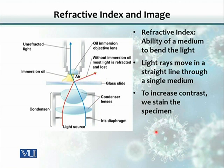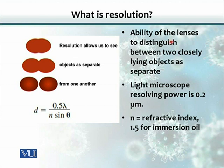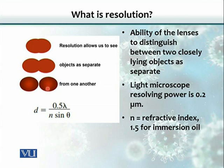In order to increase contrast, we stain the specimen. Staining is basically to increase contrast so our eyes can see the organism or object more easily. Resolution is the ability of a lens to distinguish between two closely lying objects as separate. As you can see here, two objects may appear to overlap — that means the resolution power of that microscope is low. With a microscope of higher resolution, the objects can be seen as separate, and naturally that is the microscope we would prefer.